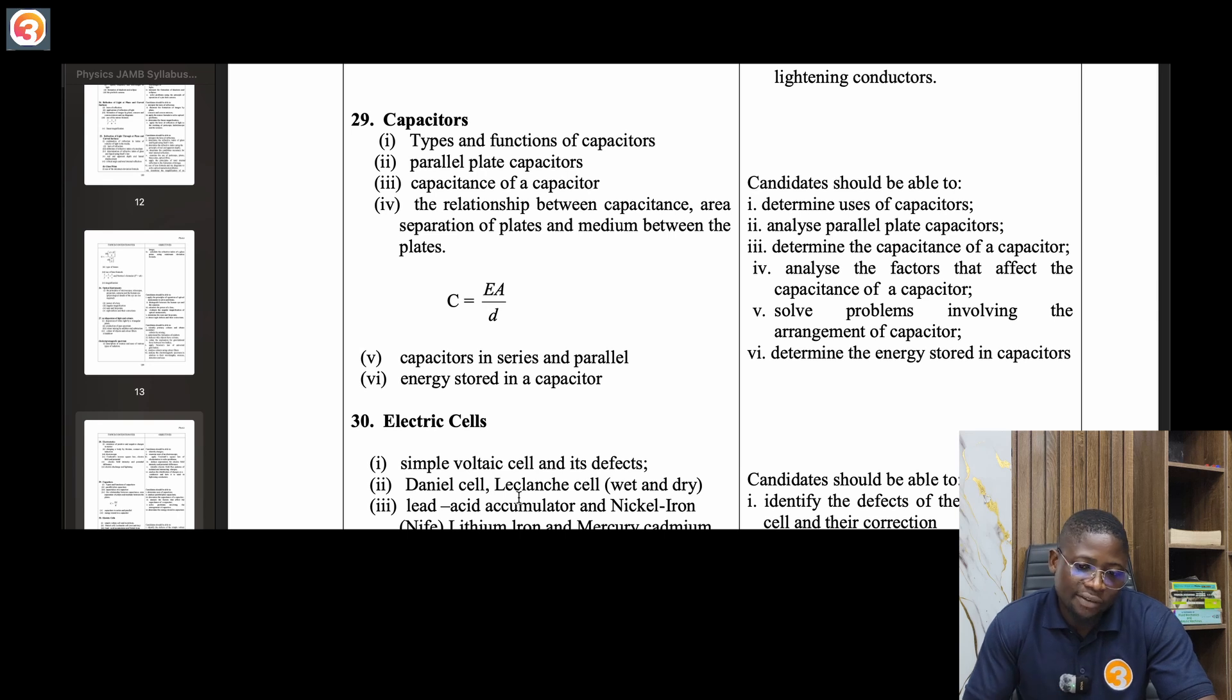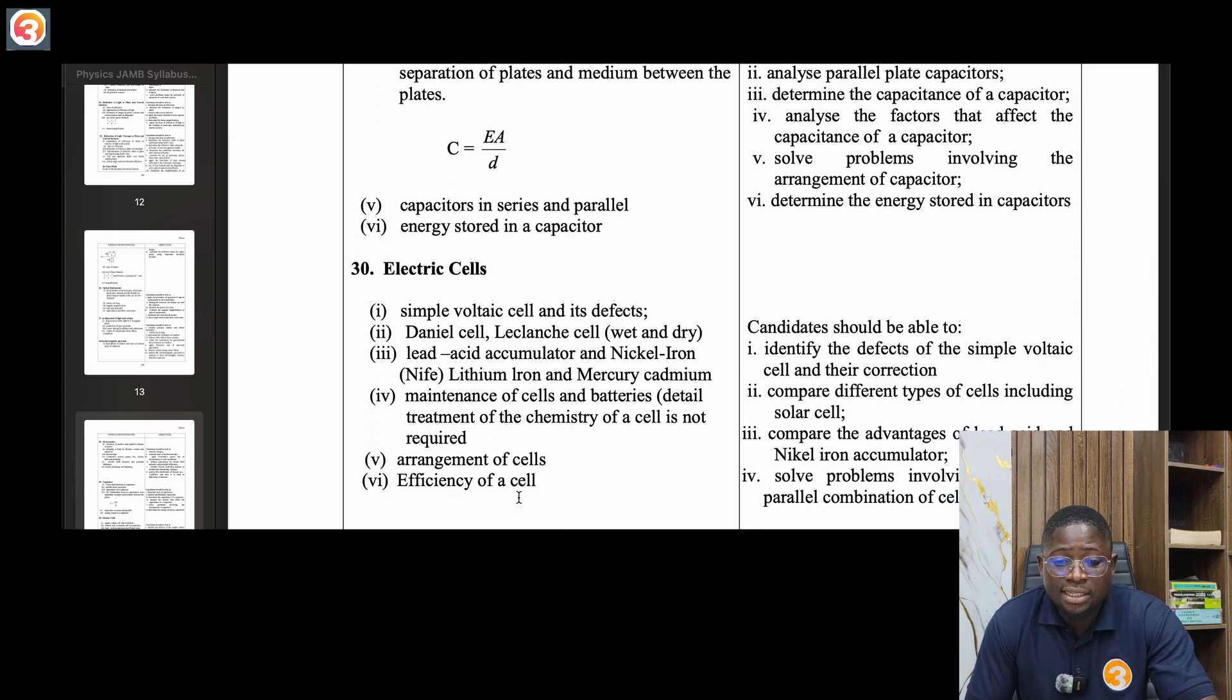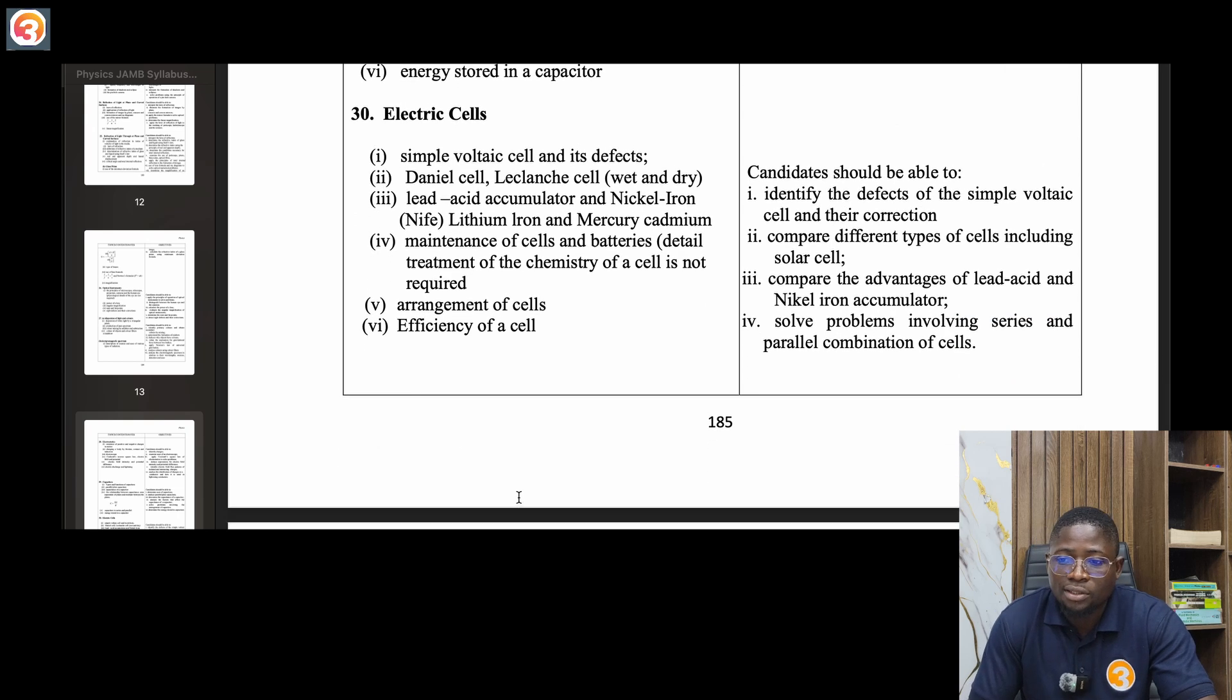Twenty-nine, capacitors. Types and functions, parallel plate capacitors, capacitance of a capacitor, the relationship between capacitance, area, separation of plates and medium between the plates, capacitors in series and parallel, energy stored in capacitors. Thirty, electric cells. Simple voltaic cell and its defects, Daniell cell, Leclanche cell, lead acid accumulator, nickel ion, lithium ion and mercury cadmium, maintenance of cells and batteries. Detailed treatment of the chemistry of a cell is not required. Arrangement of cells, efficiency of a cell.